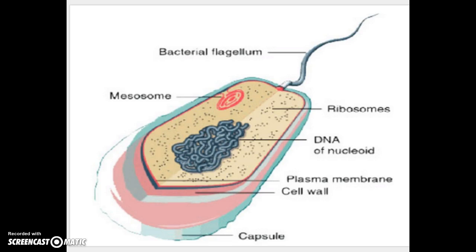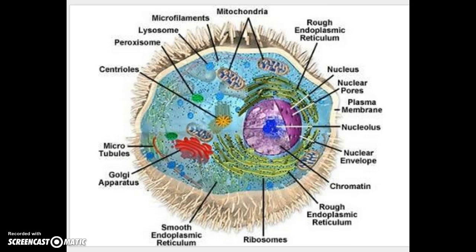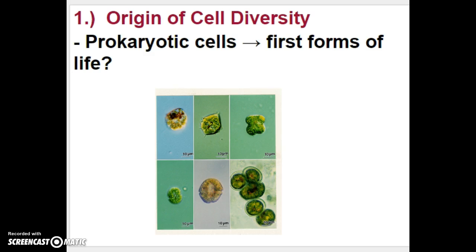Here we have an example of a prokaryotic cell — not much going on in there. This is an example of an animal cell, and you can see there are a lot more things inside, with a lot more actions taking place. Where do cells come from? If they come from a cell, where did the first cell come from? More than likely, the first forms of life on this planet were prokaryotic — simple — and then they became eukaryotic later on.